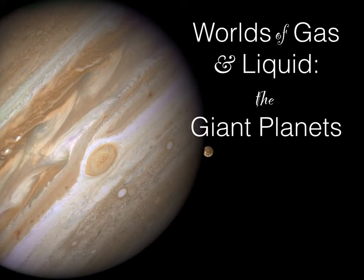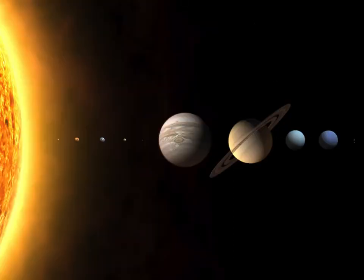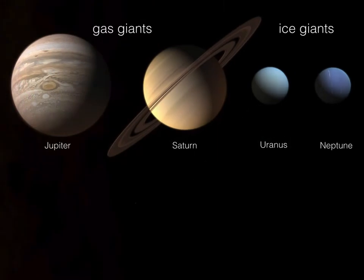We're talking about the giant planets, and there are four giant planets in our solar system: Jupiter, Saturn, Uranus, and Neptune. You often will hear these four planets referred to as gas giants, but in reality they're subdivided into two subclasses. The first two are the gas giants — Jupiter and Saturn. The second two are the ice giants, and each of these planets are essentially two of a kind.